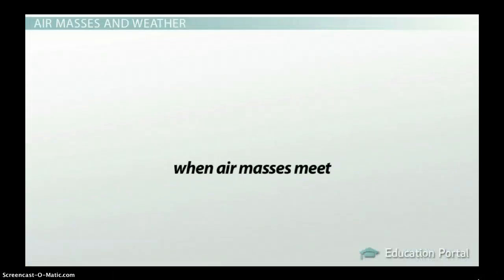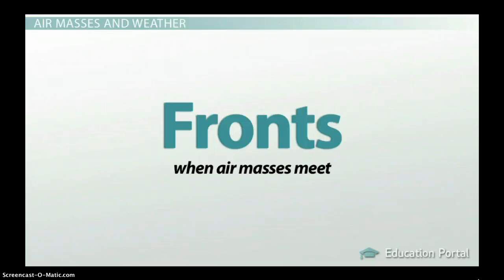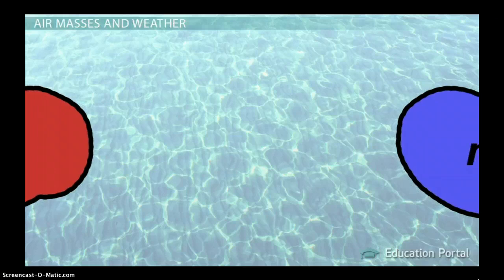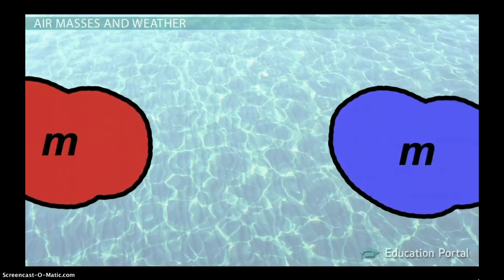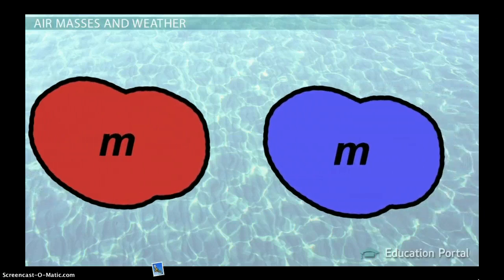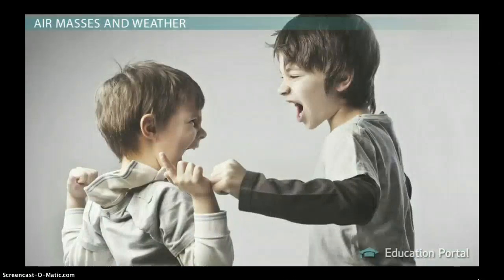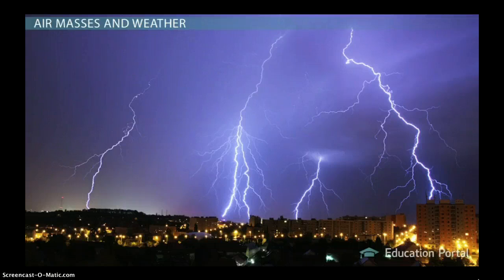Finally, when air masses meet, they create fronts. Fronts are the contact zone between two different air masses. They may differ in pressure, temperature, density, and moisture, but usually it's a combination of all these factors. Air masses are like people with differing opinions — one may eventually win over the other, but the disagreement itself creates storms and changes along the zone of contact as the air masses fight it out.